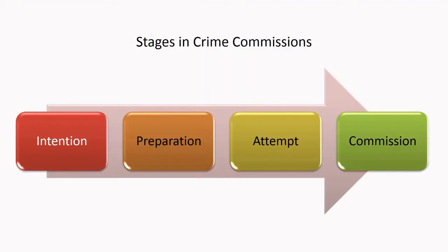Now on to the stages in crime commissions. There are basically four stages in crime commissions. They go in a sequence. They are Intention, Preparation, Attempt, and Commission. Now let us learn in detail what these terms mean and what are the significances of each of these stages of crime commissions.